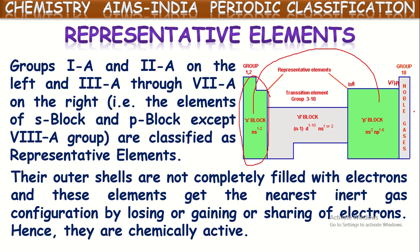Which elements are called representative elements? S block and P block elements, except the 8A group noble gas elements — all together considered as representative elements. The S block elements are the first two columns: 1A group, alkali metals, and 2A group, alkaline earth metals. The P block elements run from 3A to 7A. The particular group elements are also named with the first element of that group.